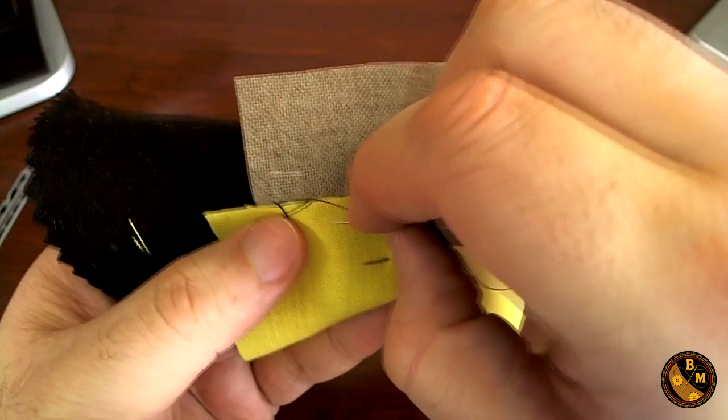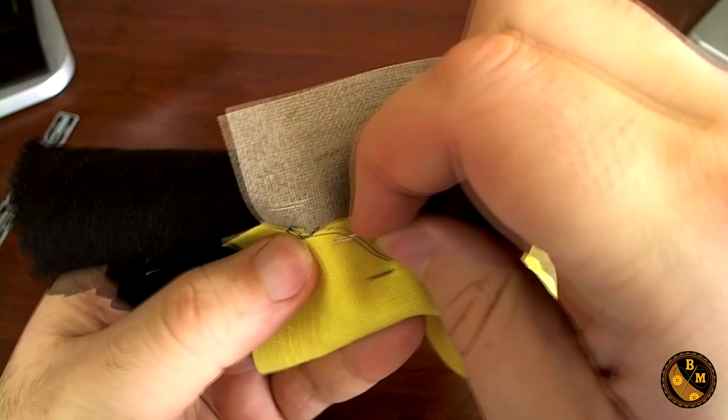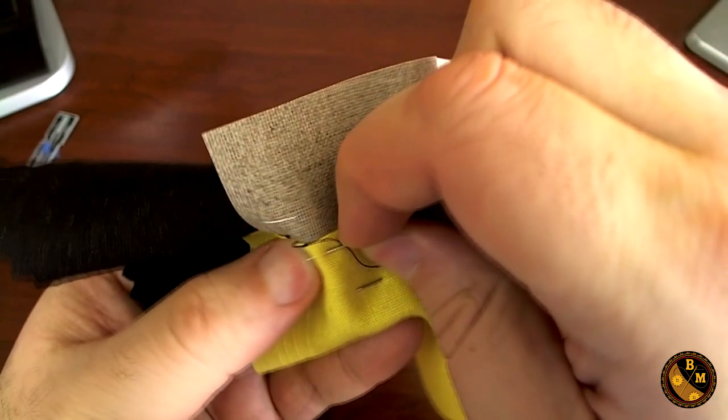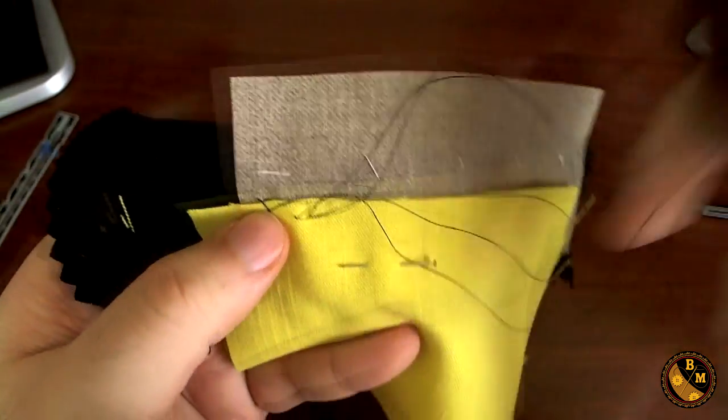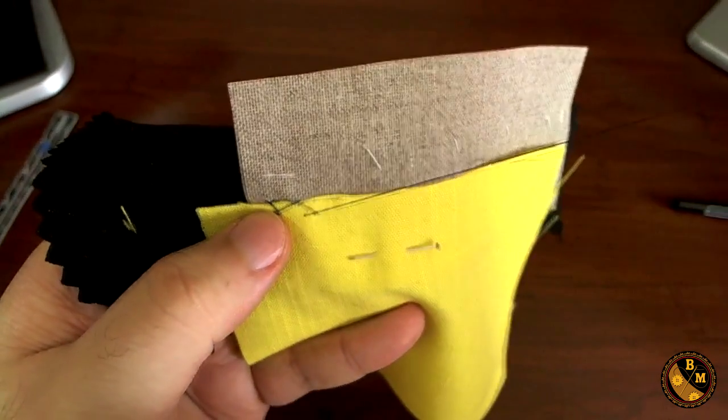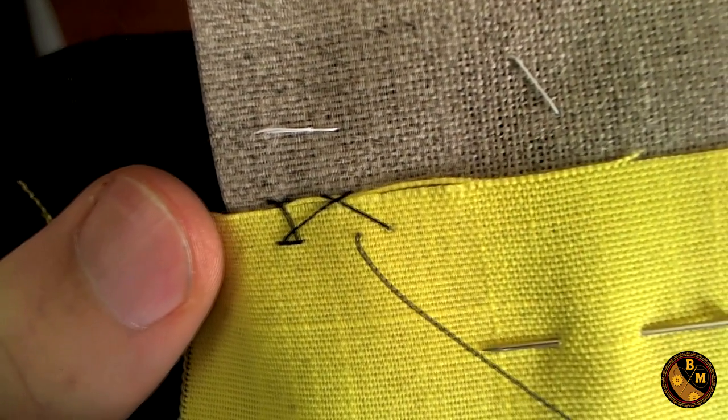Next, we're going to move another 3 eighths of an inch forward through both the pocketing and the canvas again. Go back about an eighth of an inch. Pull through. And you have the next stitch. As you can see, a herringbone pattern is starting to emerge.